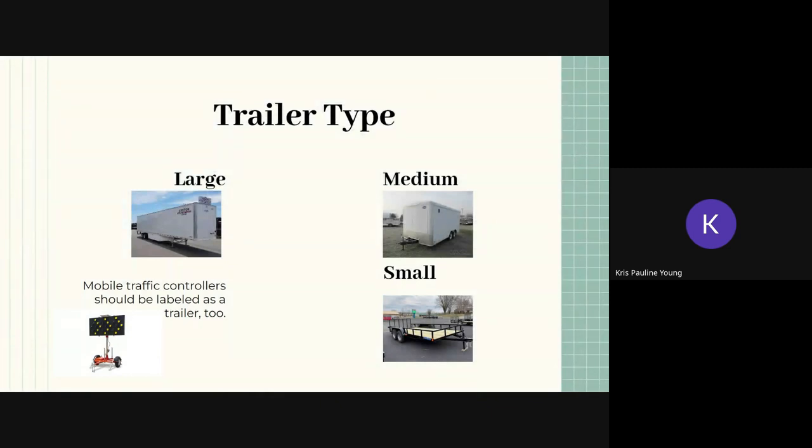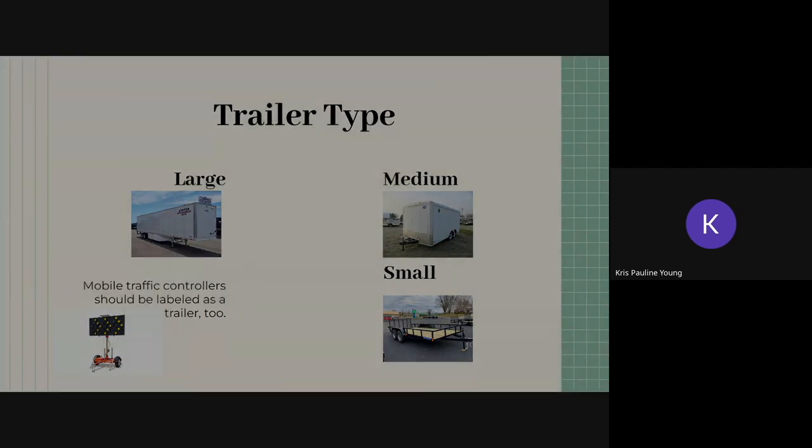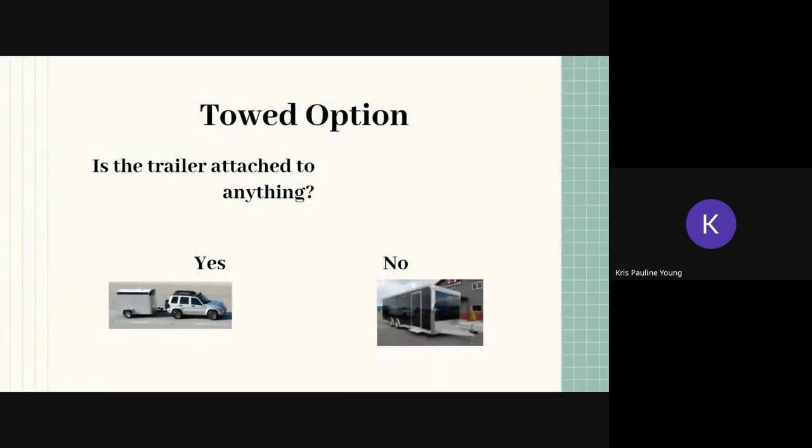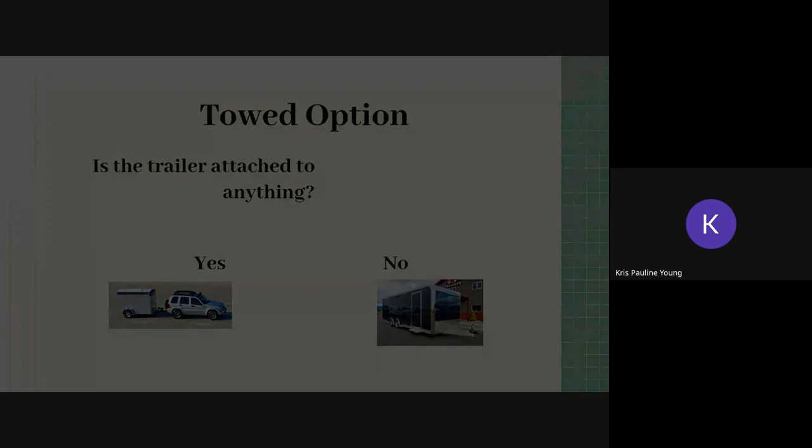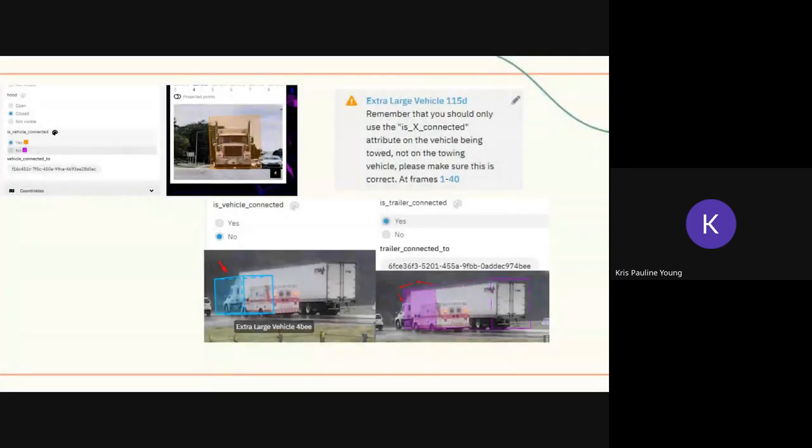We do have trailers and GOAT, so these are the different sizes that we have. Most common one you'll see will be a large trailer, and oftentimes you'll probably see traffic controllers as well. Traffic controllers should be labeled as a trailer, I believe it is a small trailer for a traffic controller. For the towed option, a trailer can be standalone or it can be actively towed by another object. If it's attached, yes. If it's not, you can just mark it as no for all frames.